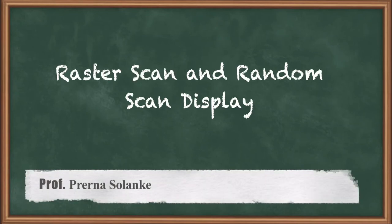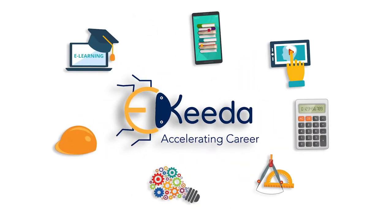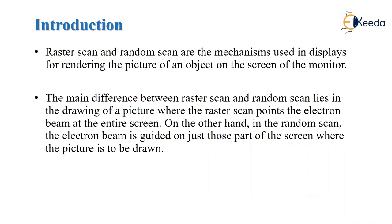Hello students, today we are going to learn about the topic raster scan display and random scan display. These raster scan and random scan displays are the mechanism used to display or render a picture of an object on a screen. Using these two displays, we can draw the picture on the screen, but both displays follow different patterns to draw the picture.